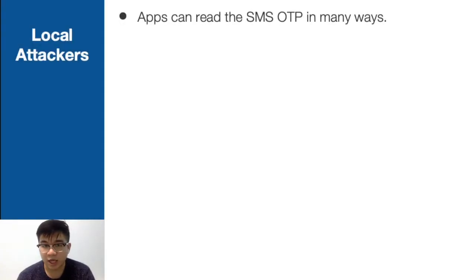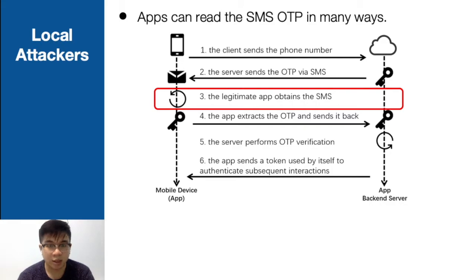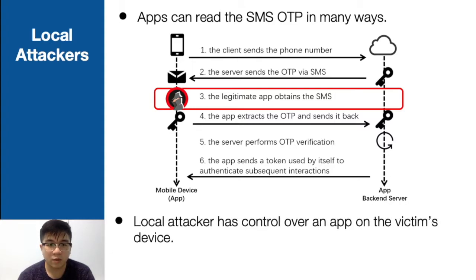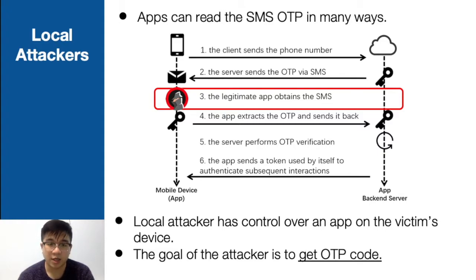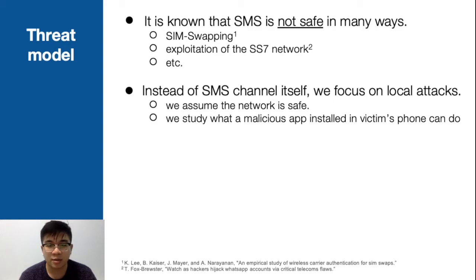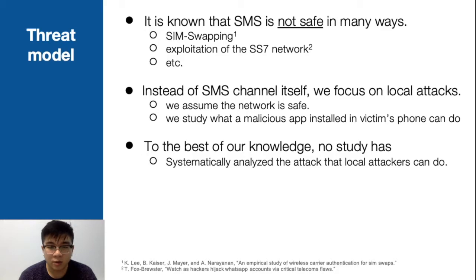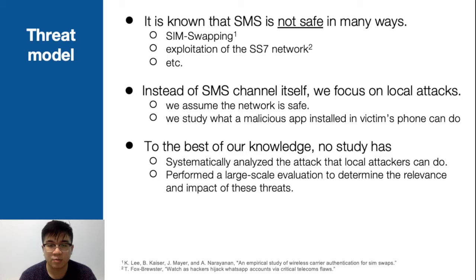What is a local attack? Apps can read SMS OTP in many ways. In the SMS authentication scheme, the first step is the client sends the phone number to the server, and the server responds with OTP via SMS. On the third step, the legitimate app needs to obtain the SMS, and it is in this step that local attackers — who have control over an app installed in the client device — can steal the OTP code in a malicious way. To the best of our knowledge, no study has systematically analyzed these attacks or performed a large-scale evaluation of their relevance and impact. Our research aims to fill this gap.